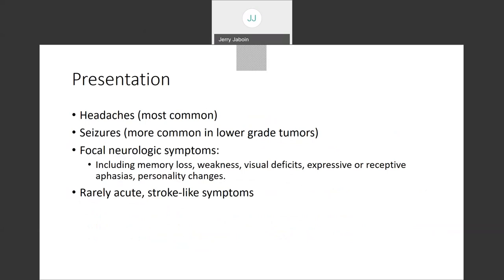How do these present? Most commonly by headaches, secondly by seizures. Seizure presentation is more common in lower-grade tumors, which are far more common in younger adults and children. In high-grade tumors, seizures occur in about 20% of patients, whereas it's closer to 70–80% for low-grade tumors. Focal neurologic symptoms include memory loss, weakness, visual deficits, expressive or receptive aphasias, and personality changes — all dependent on tumor location and vasogenic edema mass effect. Rarely there can be acute stroke-like symptoms when tumors hemorrhage in about 2% of patients.